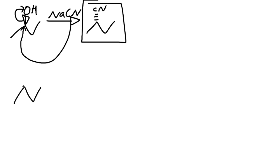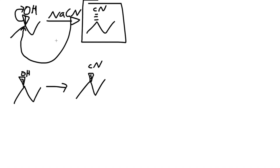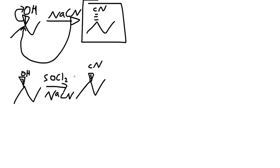What if we need to end up with a wedge? In an SN2 reaction, inversion happens — so if we need that product, inversion would have to happen twice. This is where we use thionyl chloride, SOCl2. Thionyl chloride is used for double inversion, and also because OH is a bad leaving group, so we have to use it to convert OH into a better leaving group.